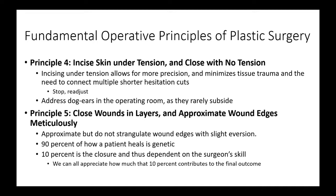Principle five: close wounds in layers and approximate wound edges meticulously. An interesting point — he says 90% of how a plastic surgery patient heals is genetic. However, that 10% is based on the surgeon, and we can all appreciate that part. Also, something we talk about occasionally: approximate but don't strangulate the wound edges for best healing.